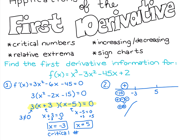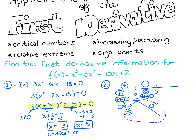Between -3 and 5, I'll test 0. The factor 3 is positive. Then 0 + 3 is positive. But 0 - 5 is negative. Two positives times a negative gives a negative, so this interval is negative — the function is decreasing. Going from a positive derivative to 0 at the critical number to a negative derivative means we went from increasing to decreasing, so we have a relative max at x = -3.